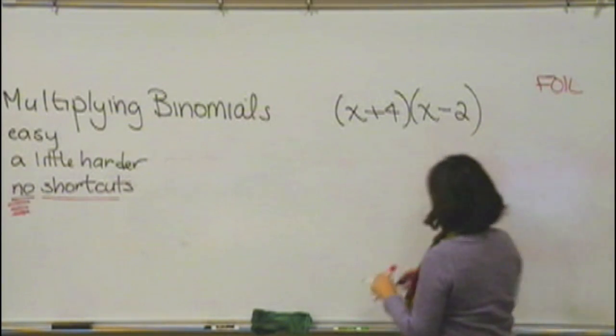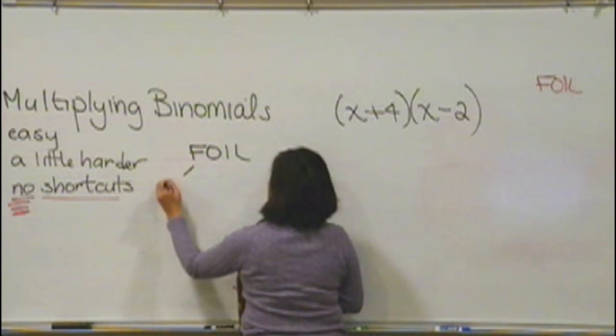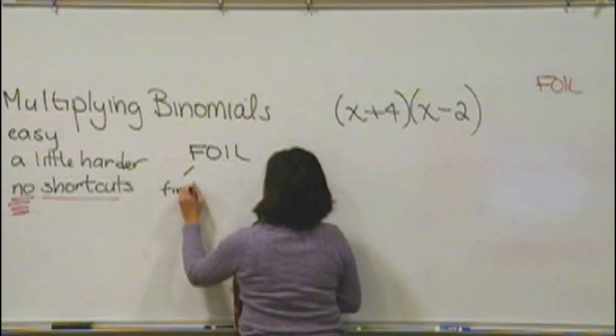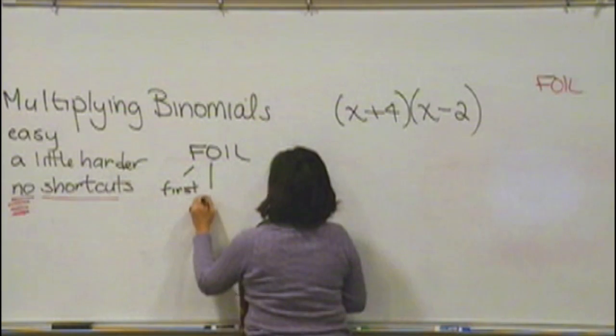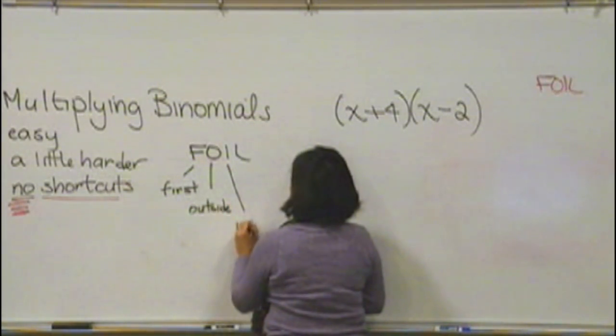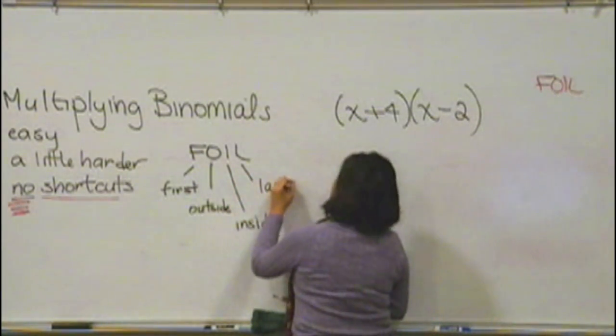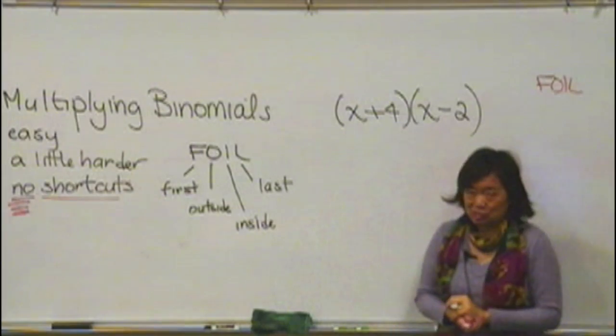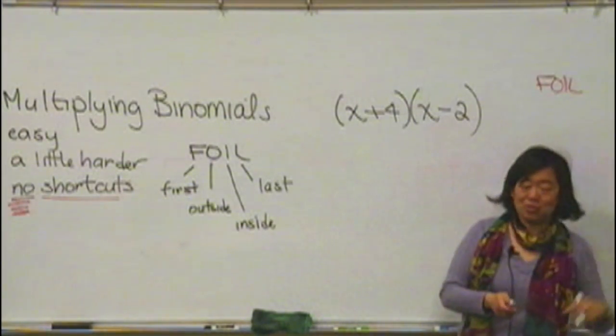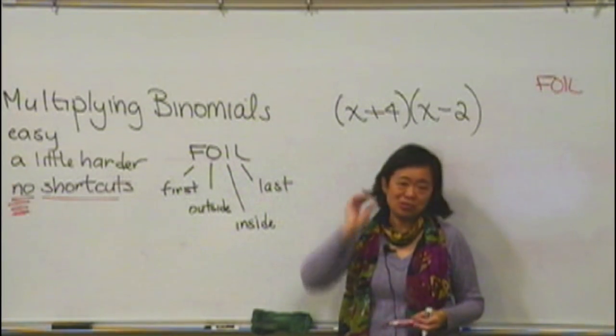Let me write it over here where more of you can maybe see it. So, FOIL. So, first, outside, inside, and last. And it's simply a way to remind you that you really have to distribute twice. And if you go through letter by letter, then you won't forget any part of the distributing you need.